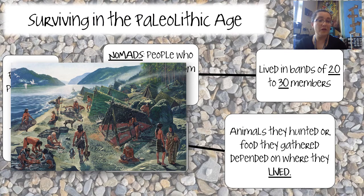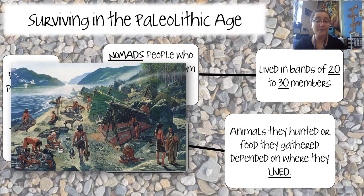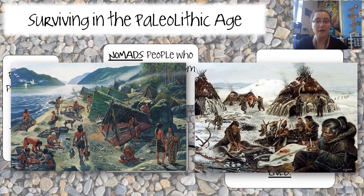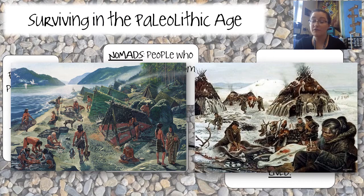If we lived near the ocean, our shelter and food would be made of things like palm fronds, and we'd get fish and other wildlife. If we lived in a very cold environment, we'd eat whatever animals we could find in the tundra and use our resources to make shelter. Even our clothing was impacted by where we lived.